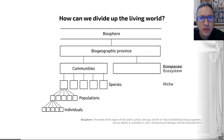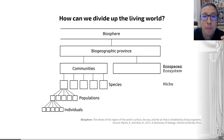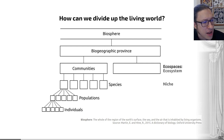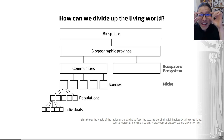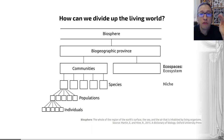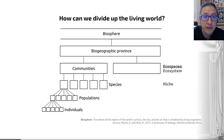The first useful thing to note is that we can divide the living world into a series of hierarchical ranks. The biosphere is the broadest ecological category — the whole region of the Earth's surface, the sea, and the air inhabited by living organisms. This hierarchical space organization goes from small individual organisms at the bottom through to populations, then species, then communities, then biogeographic provinces.